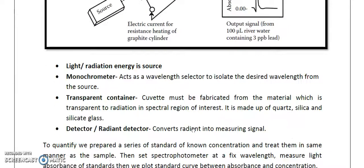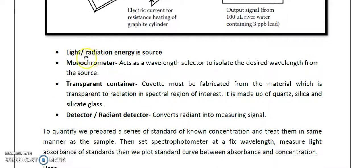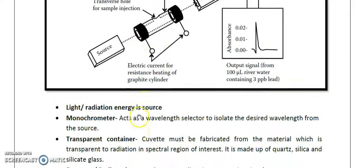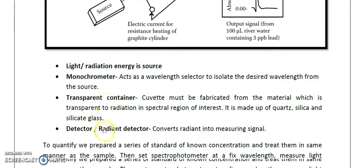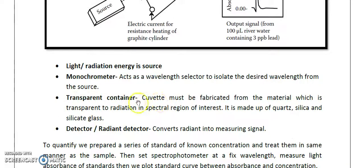The components of a spectrophotometer include a light or radiation energy source, then a monochromator which acts as a wavelength selector to isolate the desired wavelength from the source of radiation, then a transparent container called a cuvette which can be made up of quartz or silica, and a detector — a type of phototube — which converts radiation energy into measurable signals shown on the monitor.